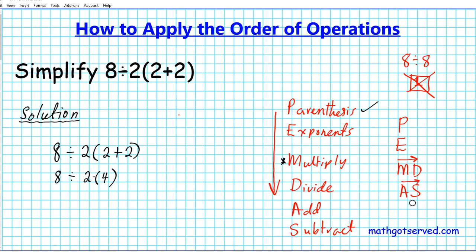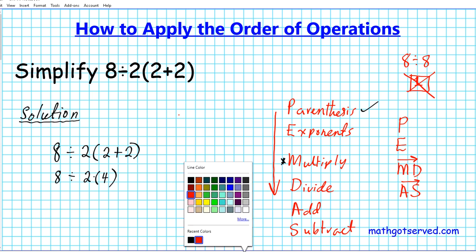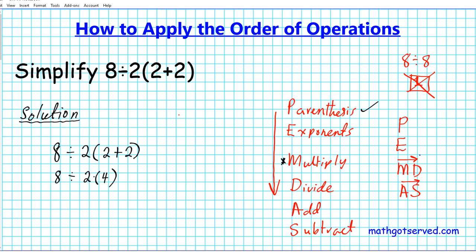So in this particular problem, we have divide and multiply. Looking at the correct way of writing PEMDAS, we notice that we are in this MD step. This MD area, multiply and divide. So MD basically tells us that these two are to be done at the same time, but whichever one shows up first from left to right is the one that we'll do first.